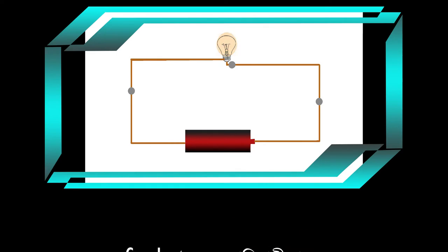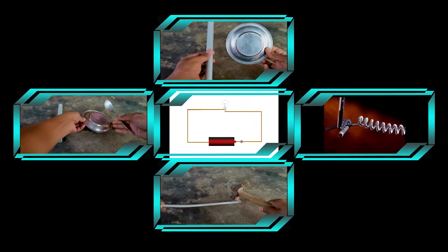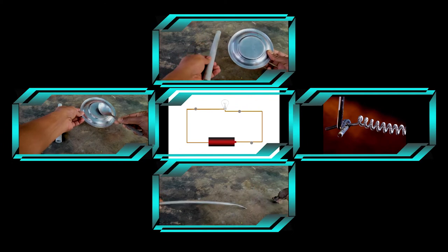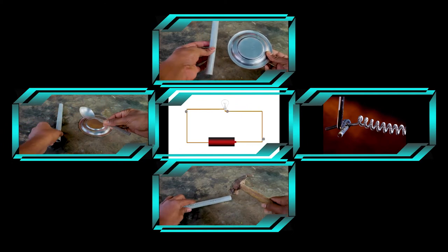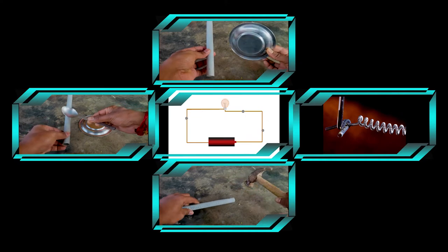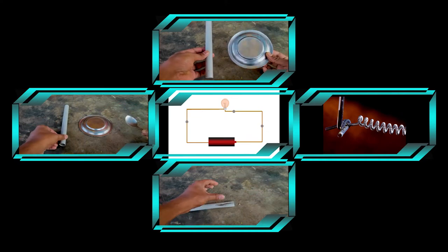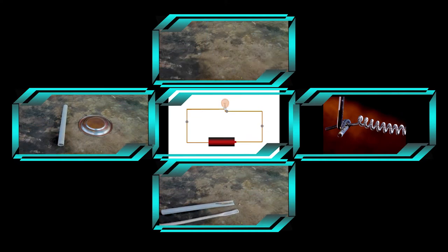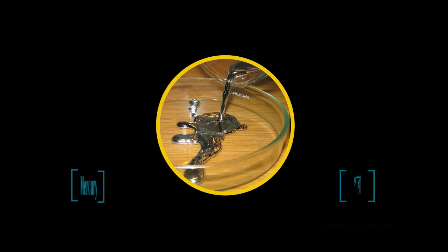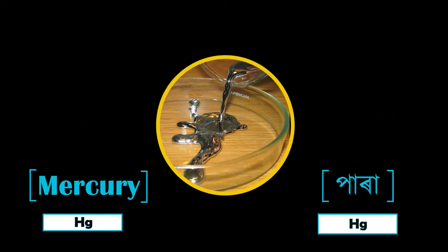These are some of the physical properties of metals. It is important to note that we can't distinguish between metals and non-metals only on the basis of their physical property. This is because there are some exceptions, like mercury is liquid at room temperature.